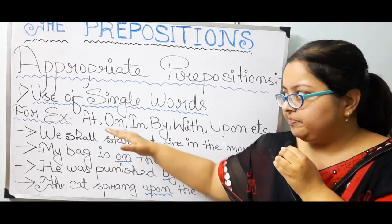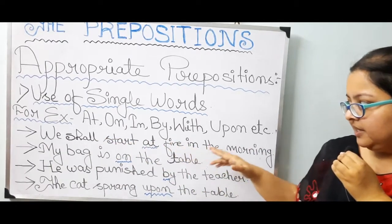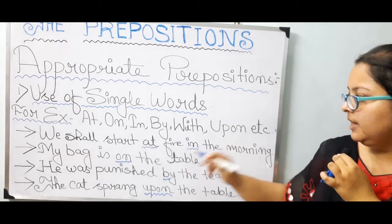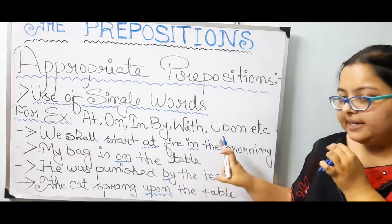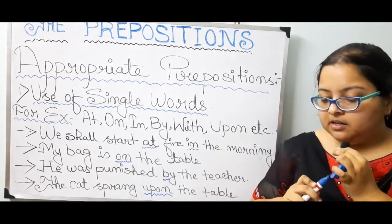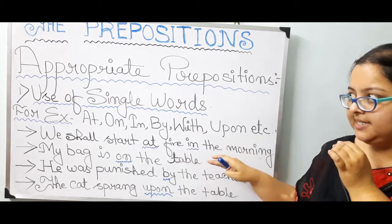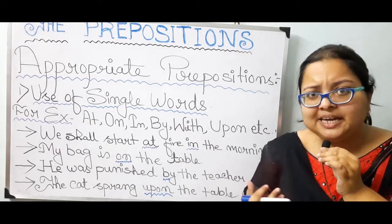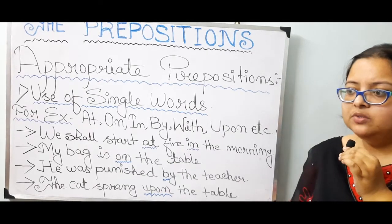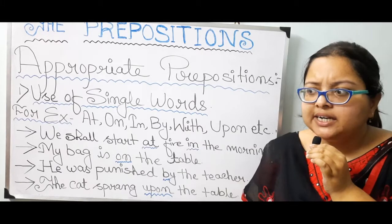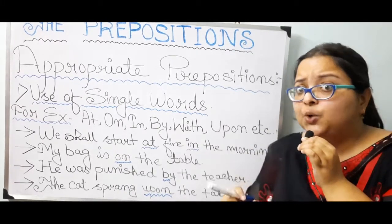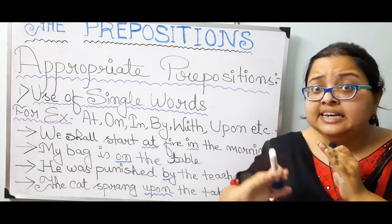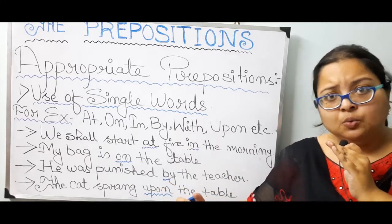Example number one: we shall start at 5 in the morning. Over here, 'at' and 'in' are indicating appropriate prepositions. What we mean by appropriate is basically something which has no alternative — you have to specifically use that one and it is the most suitable one. It cannot be replaced by any other word.